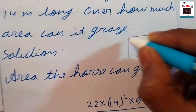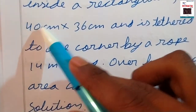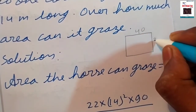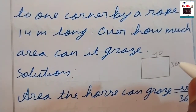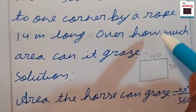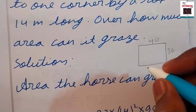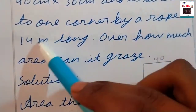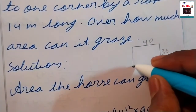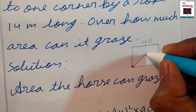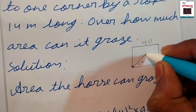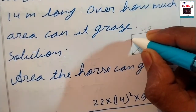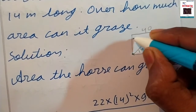Here we have a rectangular field of dimensions 40 by 36. The horse is tied at one corner of the field with a rope of 14 meters. The area the horse can graze forms a sector shape from that corner.